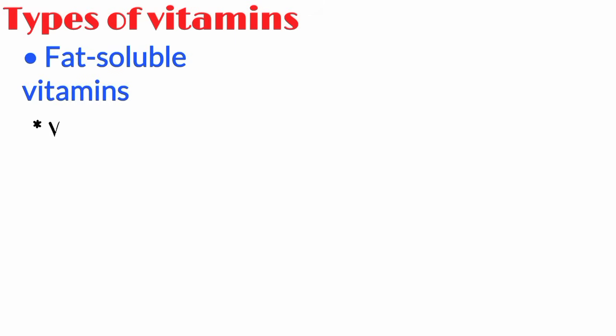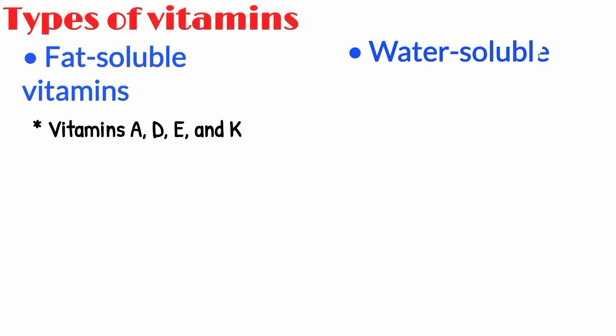There are two main types of vitamins. Fat-soluble vitamins, which includes vitamin A, D, E, and K, and water-soluble vitamins, which includes vitamin B and C.